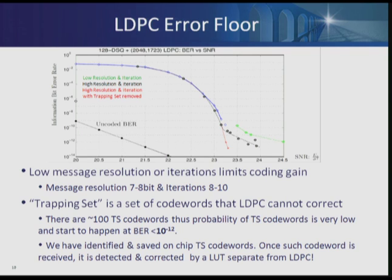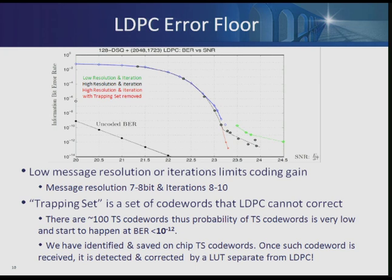LDPCs are inherently flawed because they do have error floors in the form of trapping sets. In a nutshell, we've identified all of these trapping sets, tabulated them, and put them in separate digital logic post the LDPC. Once we detect any of these trapping sets, we go ahead and decode them and correct the errors. With a low-resolution implementation you get a mediocre line; with a better resolution, a better line; and with the full LDPC decoder, you get significant improvement in the error rate versus SNR curve.